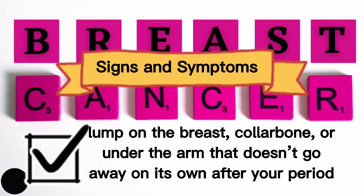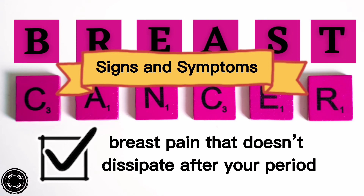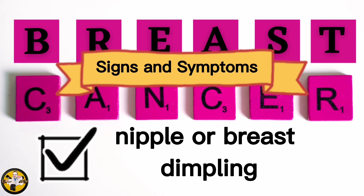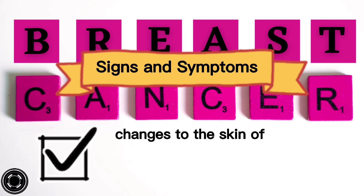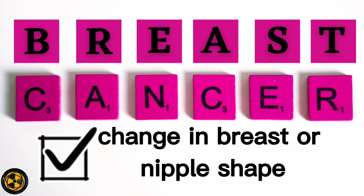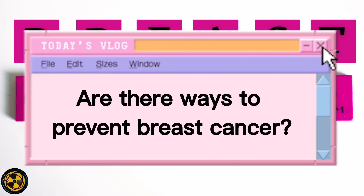Signs and symptoms to look for include: one, a lump on the breast, collarbone, or under the arm that doesn't go away on its own after your period; two, breast pain that doesn't dissipate after your period; three, nipple discharge; four, nipple or breast dimpling; and five, changes to the skin of your breasts that include redness, rash, or being warm to the touch, or a change in breast or nipple shape.